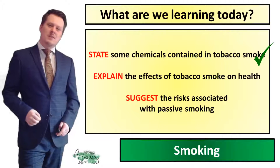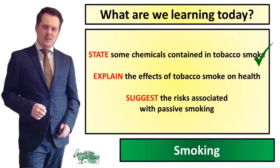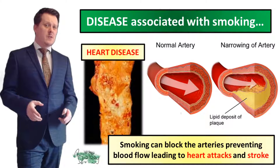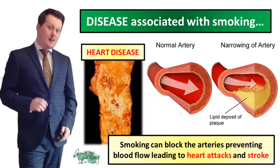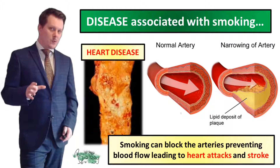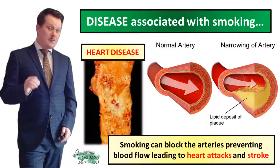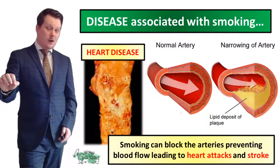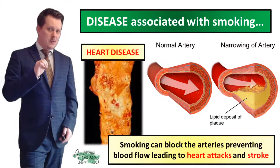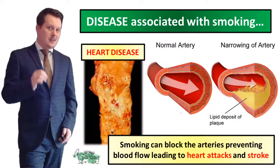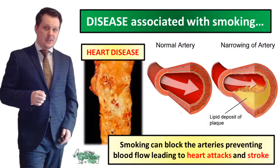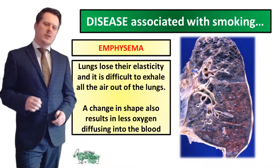So now we have stated some of the chemicals which are contained in tobacco smoke. We're going to kick off the effects of smoking with heart disease — this occurs because you get fatty deposits in some of your blood vessels called arteries. Sometimes these fatty deposits can break off and travel around the circulatory system. If that fat blocks the blood flow in the heart it can lead to a heart attack, and if it blocks the blood flow to the brain it can lead to a stroke.